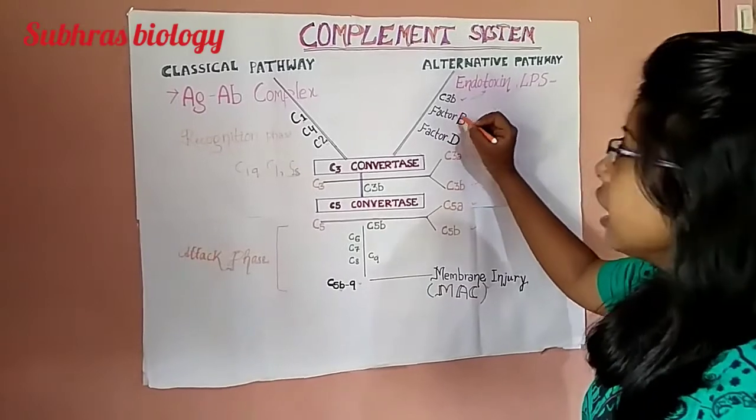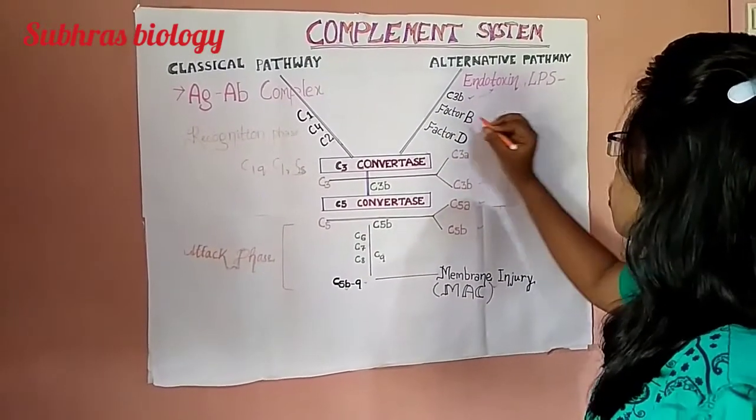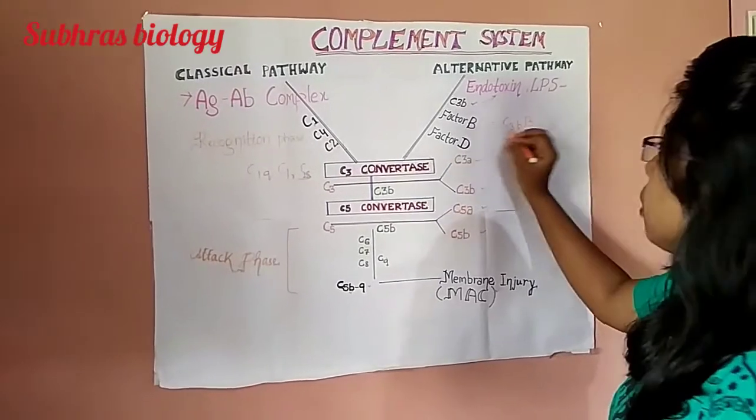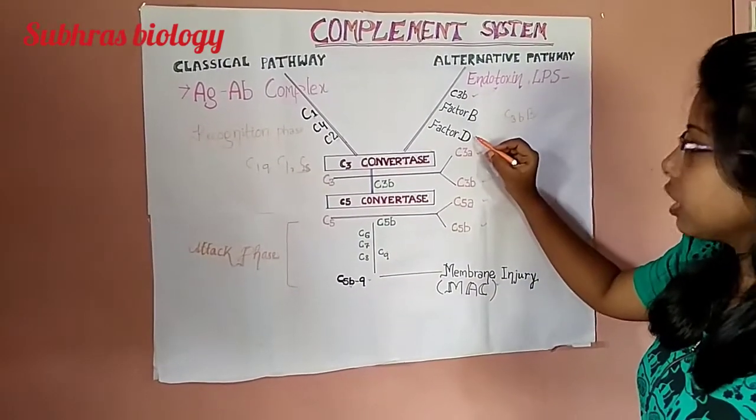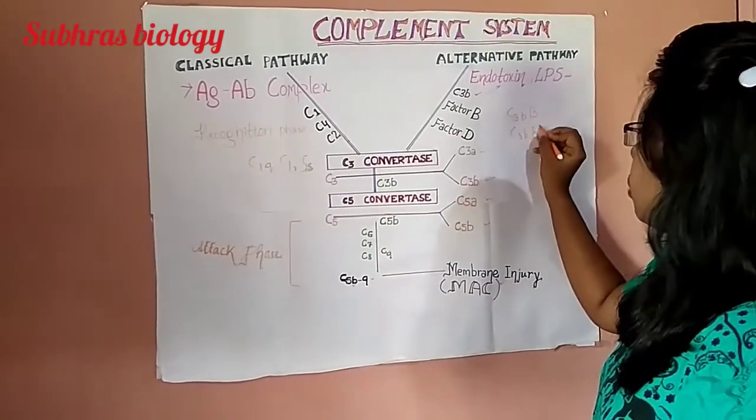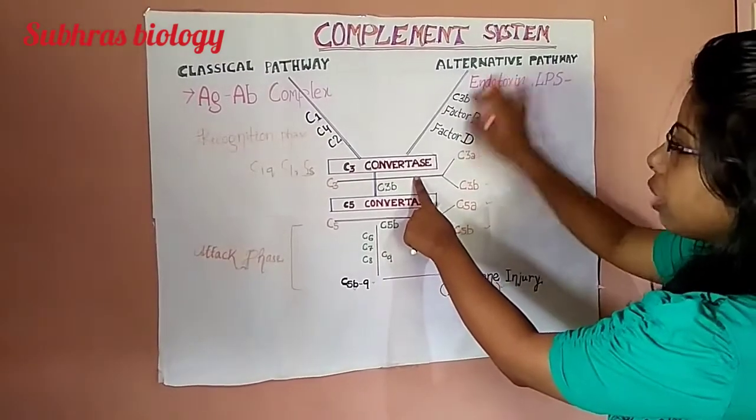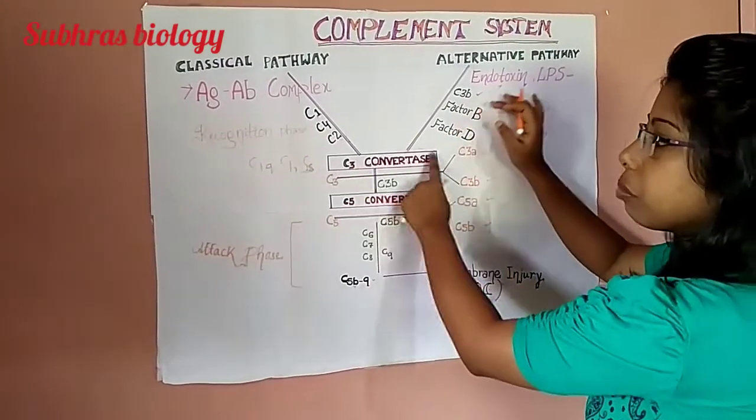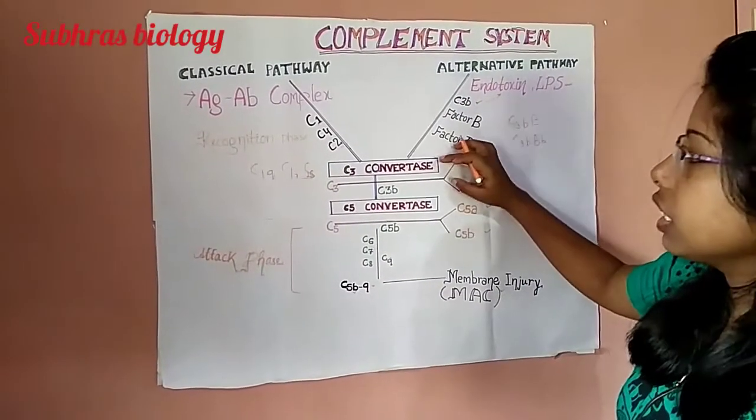In the presence of factor B, it forms C3BB. Also at the same time, in the presence of factor D, it forms C3BB. So this is the C3 convertase here. Next, same as that of the classical pathway from C3 convertase. This is similar as the classical pathway.